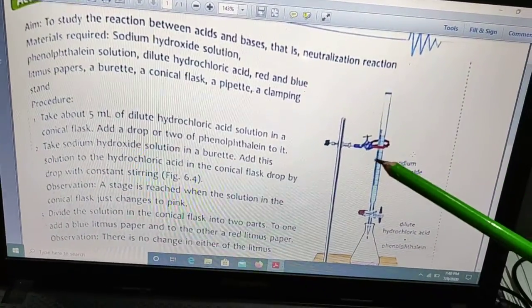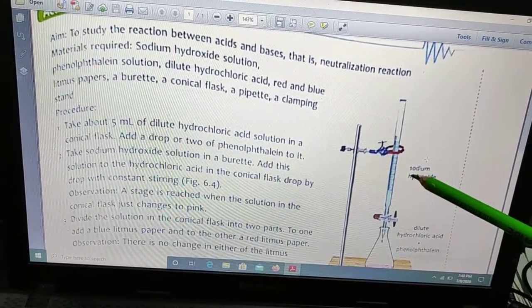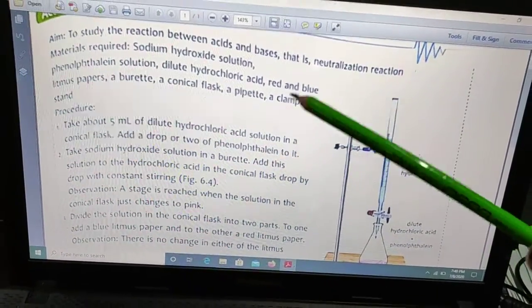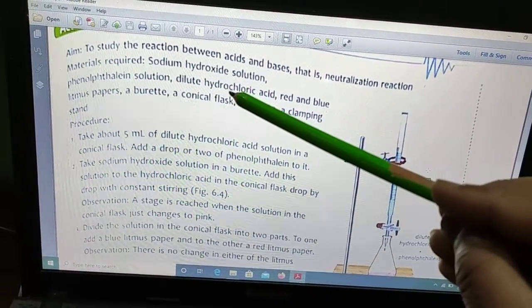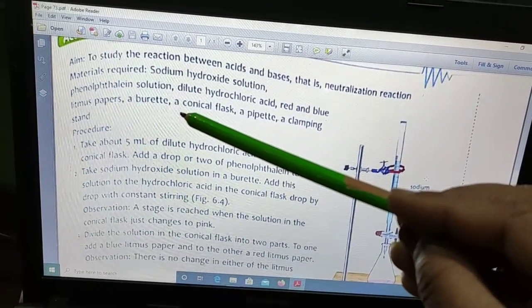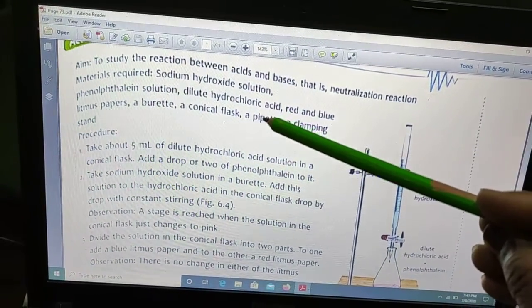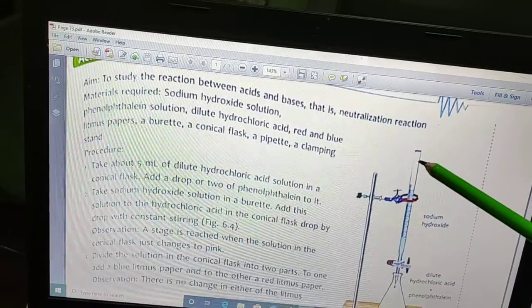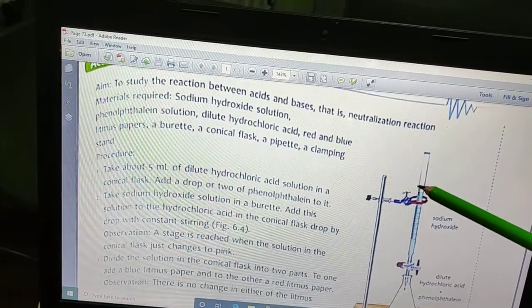In this it has been shown how neutralization reaction takes place. For example, the materials required in this case are sodium hydroxide solution which is a base, phenolphthalein solution which is an indicator that shows change in color in different solutions, dilute hydrochloric acid, then we have red and blue litmus paper, a burette, a conical flask, a pipette, and a clamping stand.